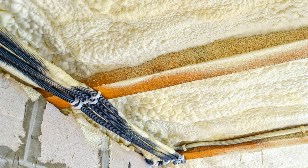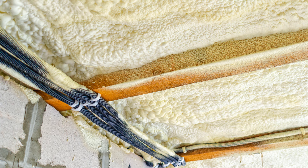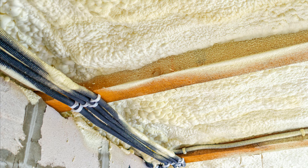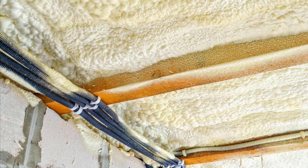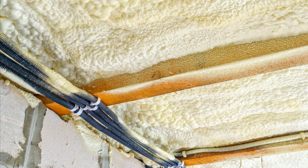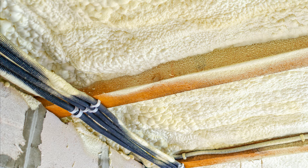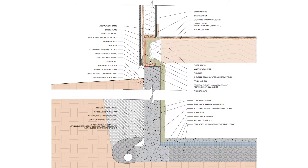If spray foam is to be specified, I recommend that it's allowed to off-gas long before the building occupants move in, and that both air samples and foam core samples are obtained and independently tested for irregularly high quantities of off-gassing chemicals — specifically the blowing agents used. Luckily, the spray foam will be protected from large fluctuations in temperature as it's located below grade or mostly below grade, separated by the thermal mass of the concrete.